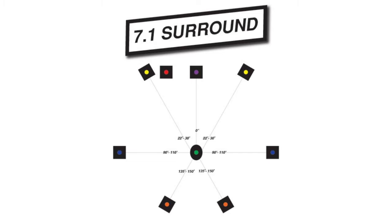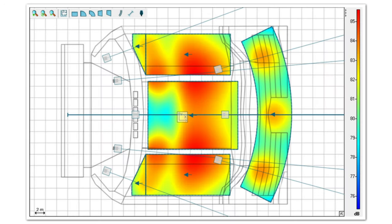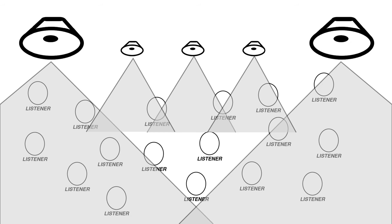Designing a home theater system is much different from designing a PA system for a music festival or a paging system for a building. In a surround sound system, the goal might be for various speakers to work together to create an immersive experience for a single listener. While addressing larger groups, the approach might change to groups of distributed speakers that address smaller portions of the audience.